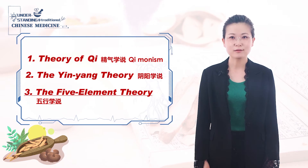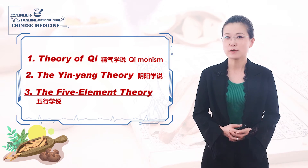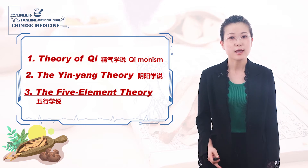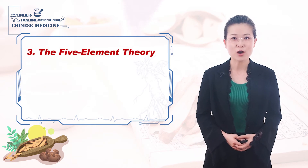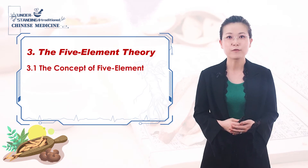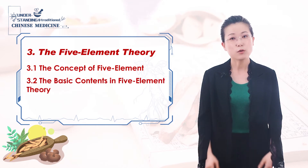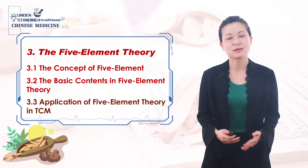Similar to the theory of yin-yang, the theory of five elements — wood, fire, earth, metal, and water — was an ancient philosophical concept used to explain the composition and phenomena of the universe. We will follow the same structure of contents as we have learned in both tea and yin-yang theory. In today's class, we will finish the concept of five elements and the basic contents in five elements theory, and leave the application of five elements theory in TCM to the next section.